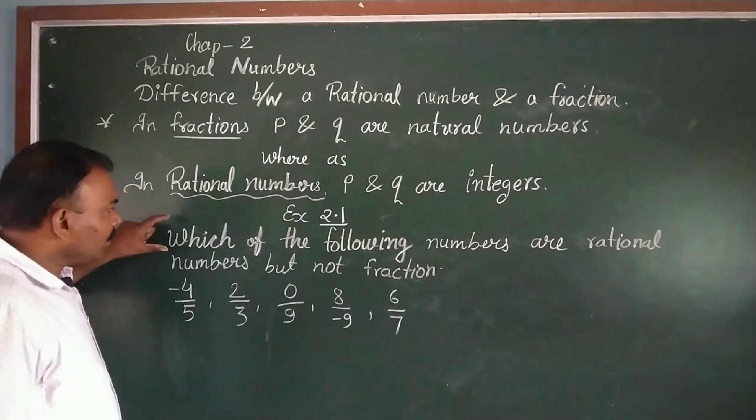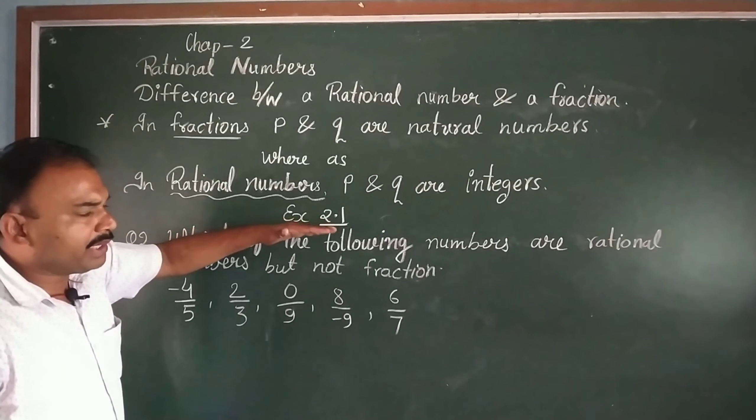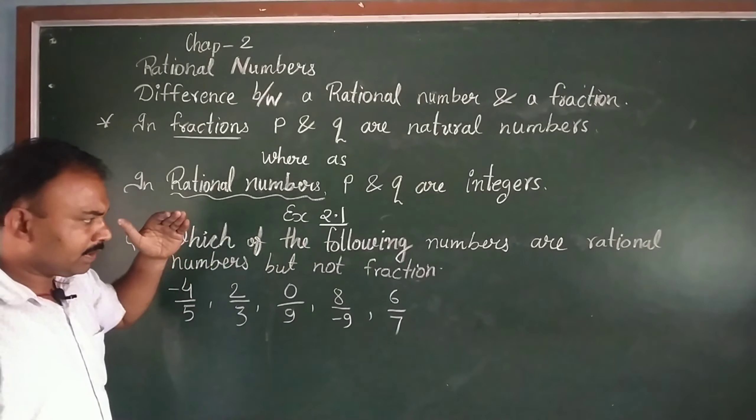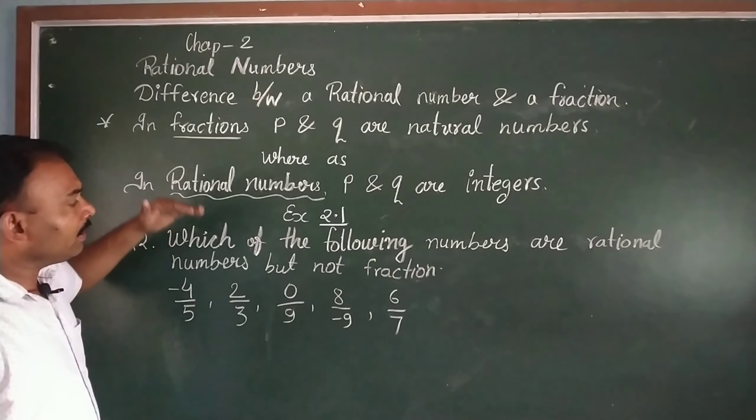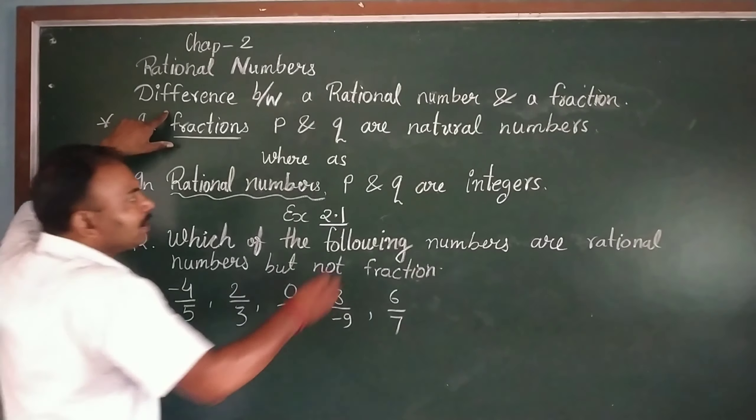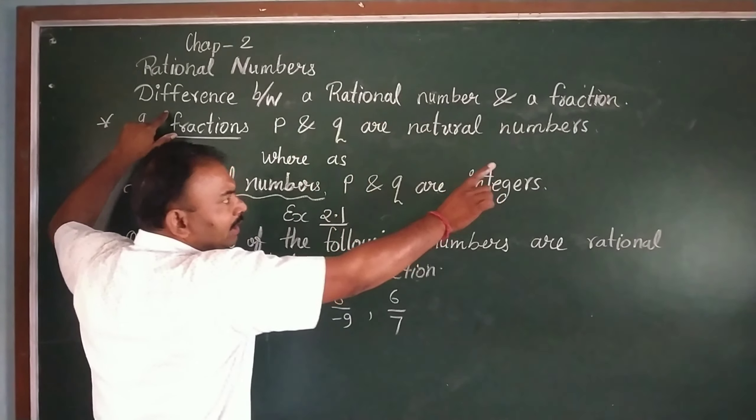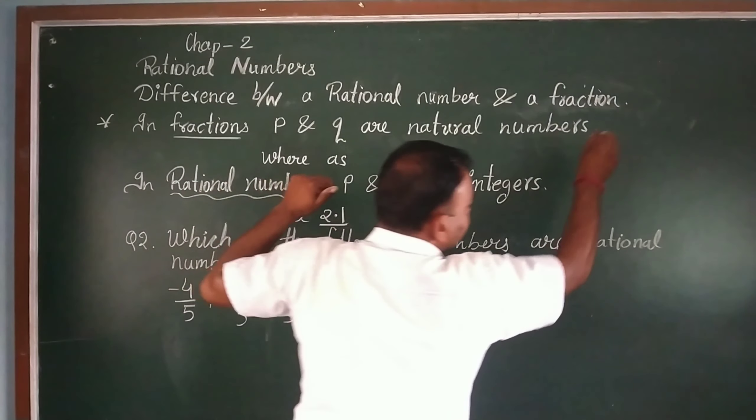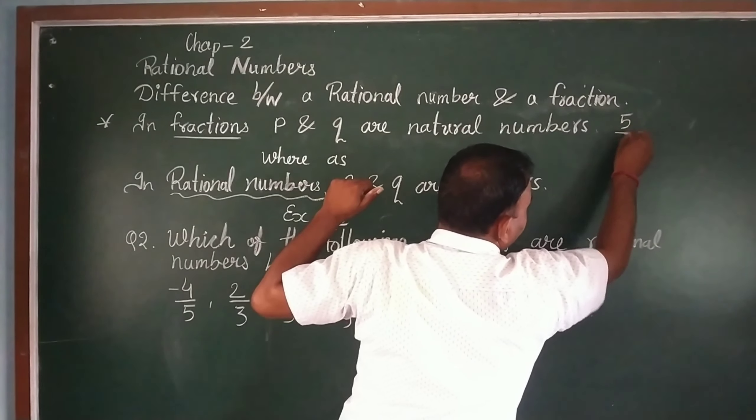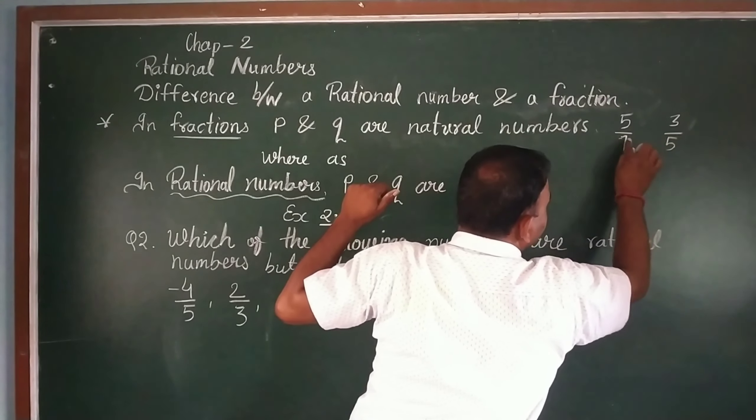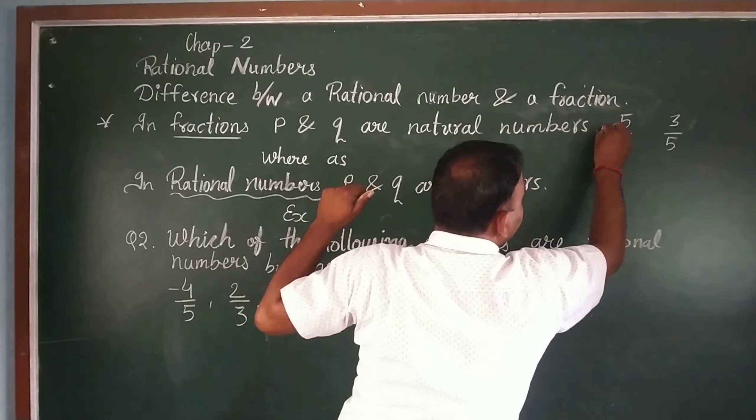Which of the following numbers are rational numbers but not fractions? If we talk about fractions, we have told you about the example of fractions. Like we have taken 5 upon 7 or 3 upon 5. What is this? This is fractions.